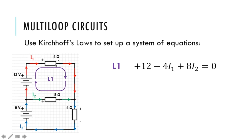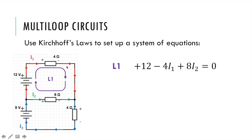Next we continue on our loop and we have one more thing to go through which is the 8-ohm resistor. Notice we go from the negative to positive side so that's a gain. We're going to add the potential difference across this resistor. Again V equals IR — we do I2 times 8 ohms and we get 8I2, so we add that. Now we're back to where we started so we set the sum equal to zero. This is our first equation, coming from going around this imaginary loop, adding any potential gains, subtracting any potential drops, and setting it all equal to zero.